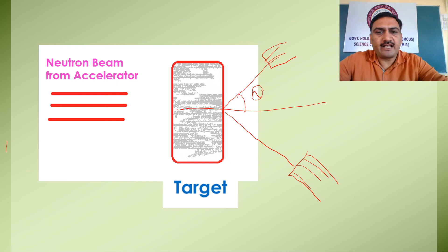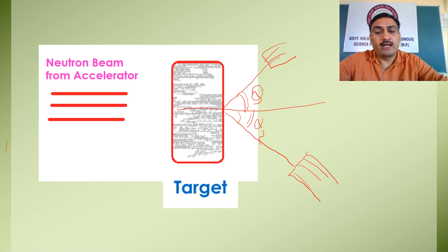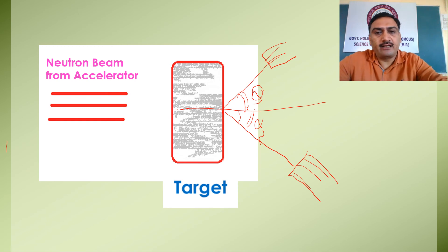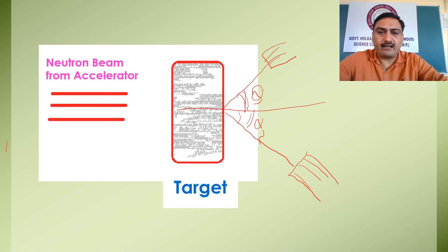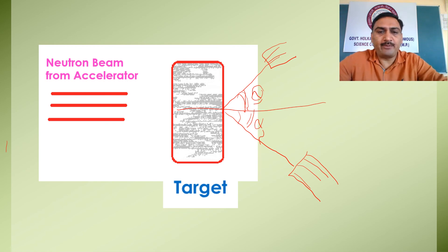The distribution of the scattered beam is different for different theta. For example, for theta-1 you will have a different count, and for theta-2 you will have a different count. It also depends on time — if you run the experiment for 5 minutes versus 2 minutes for the same theta, you will get a different profile of the scattered beam. For the 2-minute experiment, the number of particles entering the detector will be less compared to the 5-minute experiment. So the number of particles coming into the detector depends on time t.